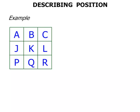Got a grid there and the letters ABC, JKL, and PQR. Now if we consider the letter A and we compare it to the letter B, we can say that A is next to B.